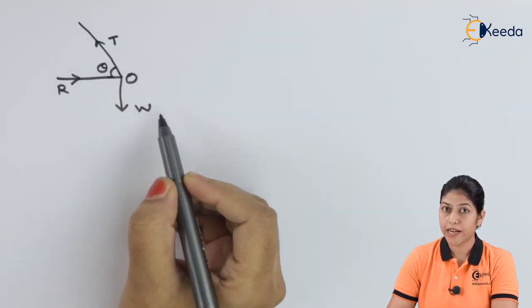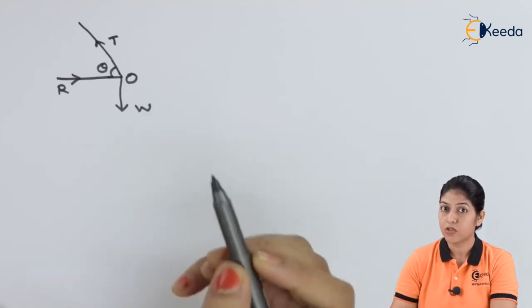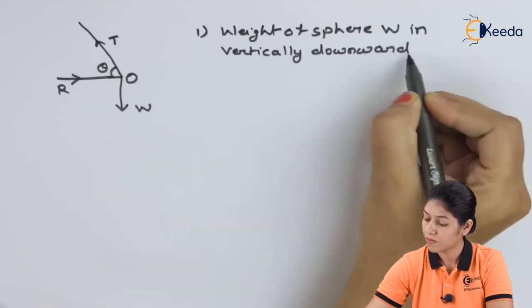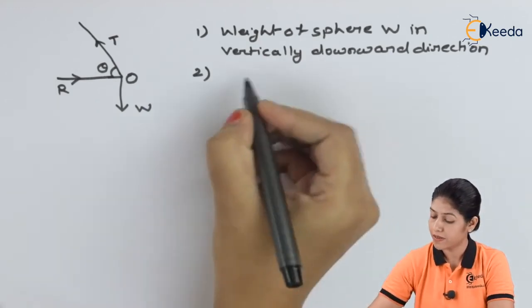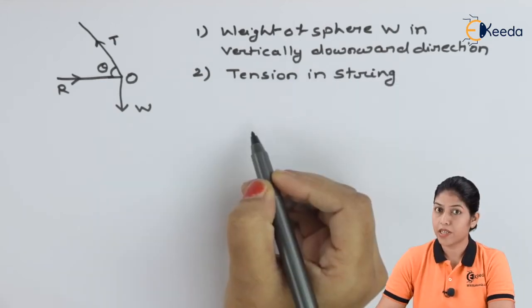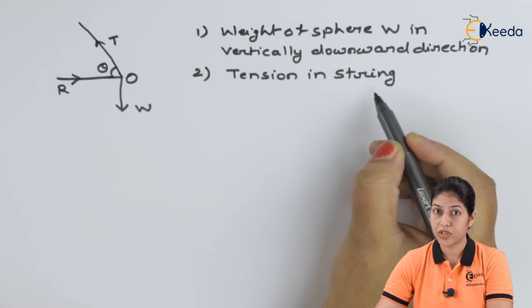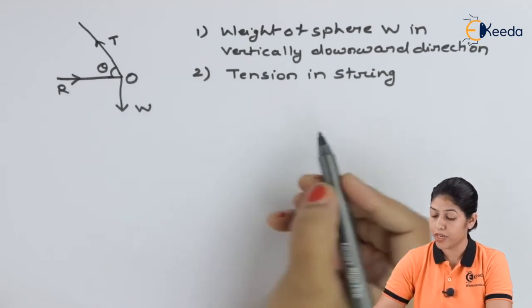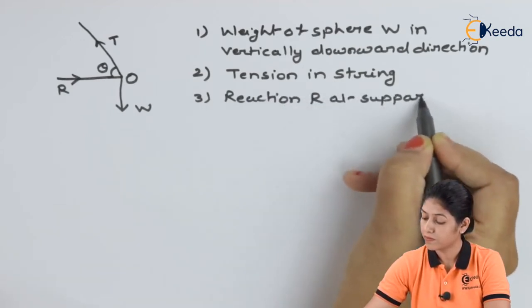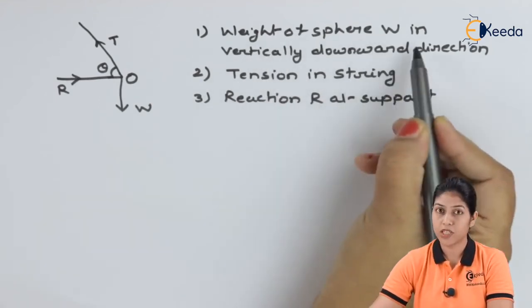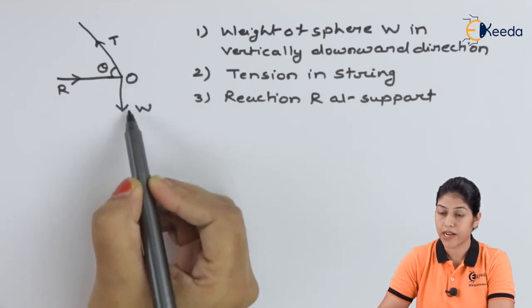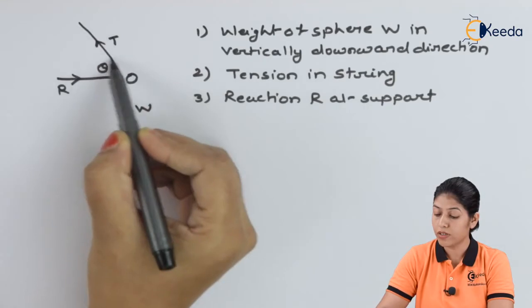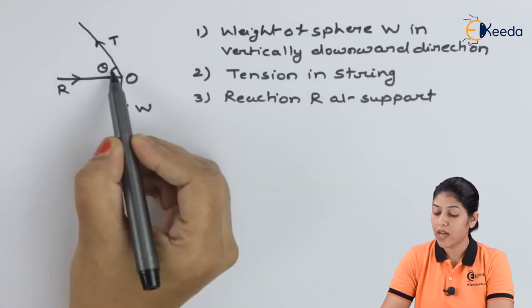This is our free body diagram. In this diagram we will consider three types of forces: weight of the sphere acting vertically downward, tension in the string acting at angle theta with the horizontal surface, and the reaction at the supported point. Here T is the tension acting at angle theta and R is the reaction at the support. We have to find the values of T and R, and first we will find the value of theta.